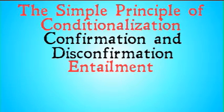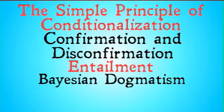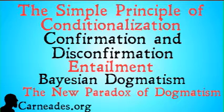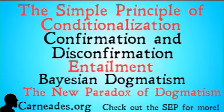Next up, we're going to talk about entailment and some interesting things that come out of entailment, Bayesian dogmatism, and finally the new paradox of dogmatism. Watch this video and more here at carneades.org. Check out the SCP for more information on Bayesian epistemology, and stay skeptical, everybody.